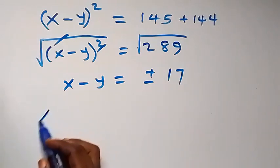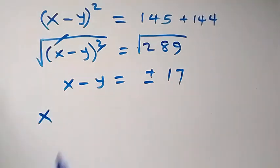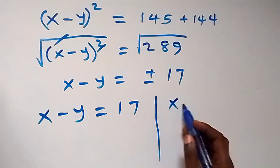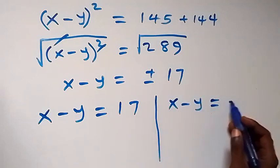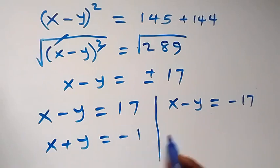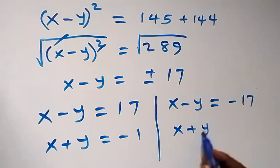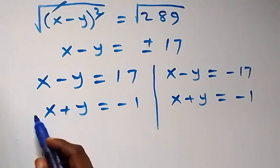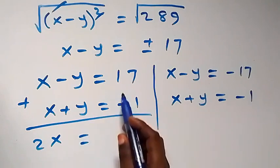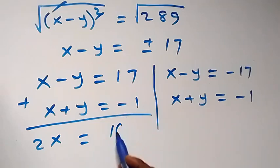This gives two values: x minus y equals 17, or x minus y equals minus 17. We solve each together with equation three, which is x plus y equals minus one. Adding the two equations in each case eliminates y.